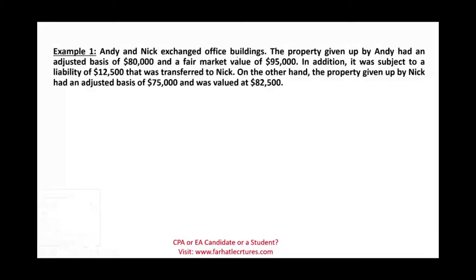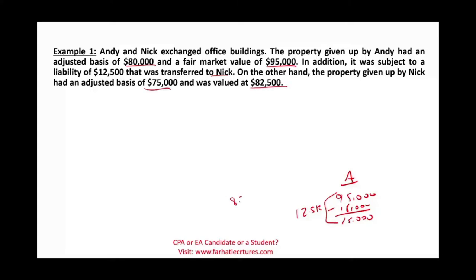Andy and Nick exchange office buildings. The property given by Andy had an adjusted basis of $80,000 and a fair value of $95,000 — so the realized gain for Andy is $15,000. In addition, it was subject to a liability of $12,500 that was transferred to Nick. On the other hand, the property given by Nick had an adjusted basis of $75,000 and a fair value of $82,500, giving Nick a realized gain of $7,500.